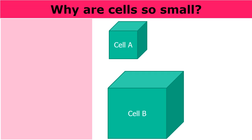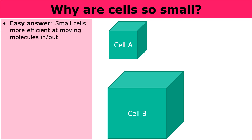So why are cells so small? Why are they microscopic? The easy answer is that smaller cells are much more efficient at moving molecules into them and moving molecules out of them. Cells generate waste and they have to get rid of it. Cells have needs — they need nutrients and they need to bring nutrients in. It's just a lot more efficient when the cells are smaller.